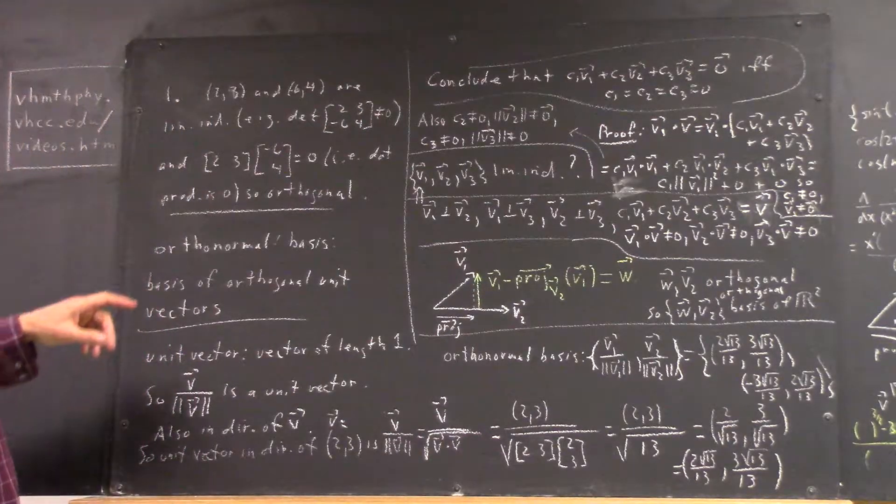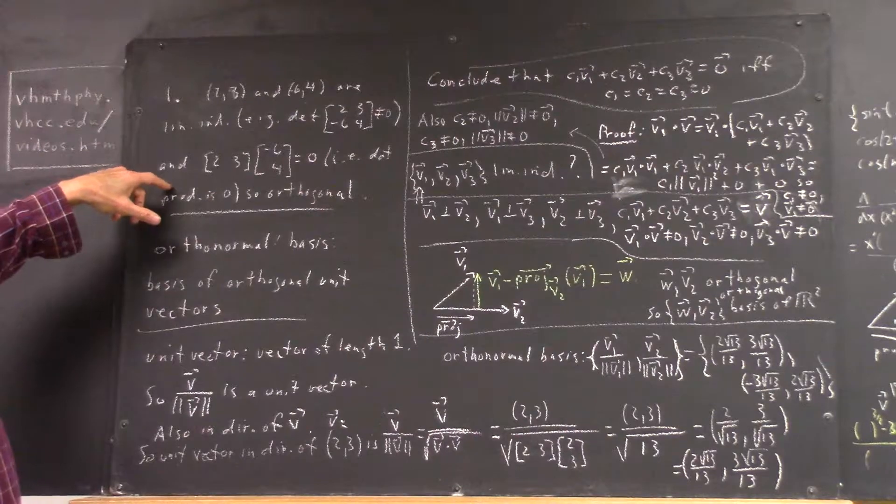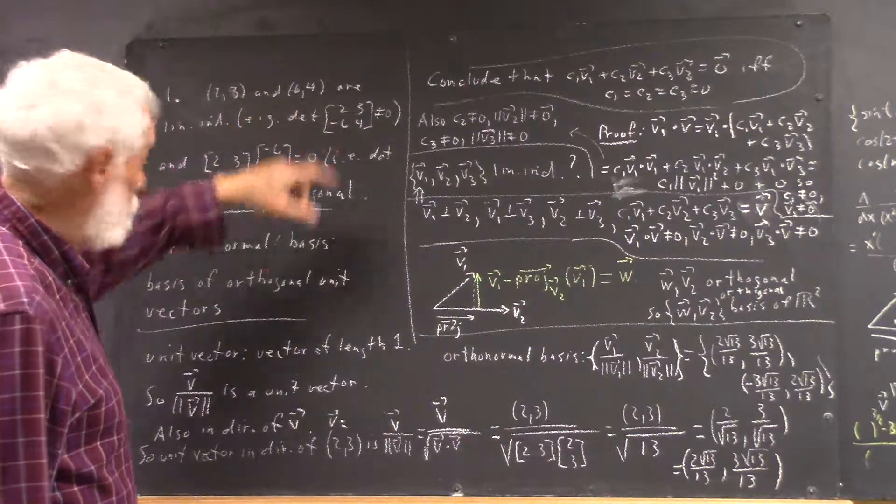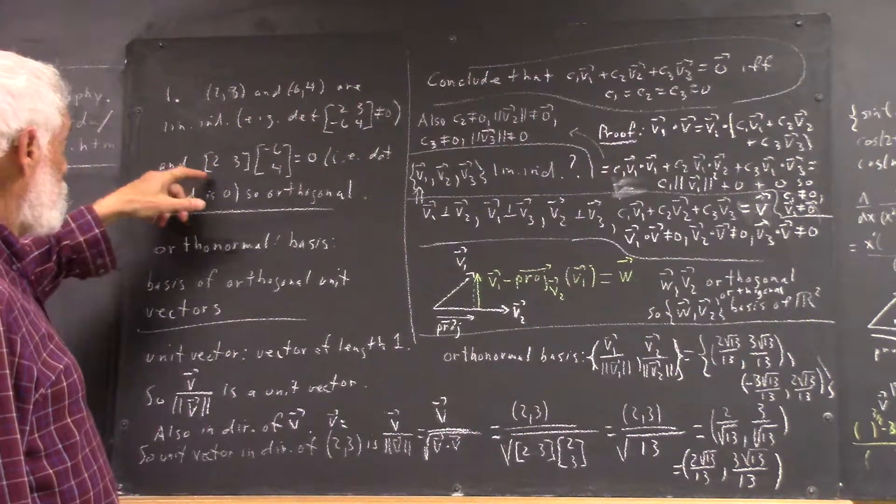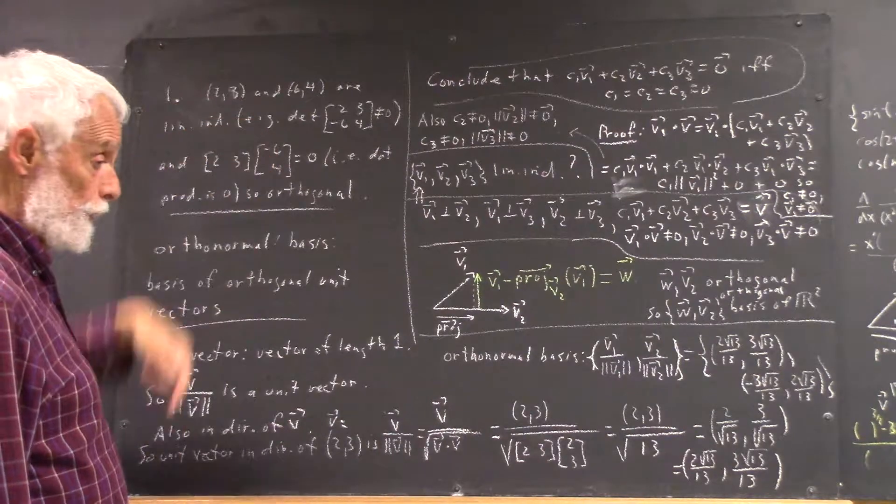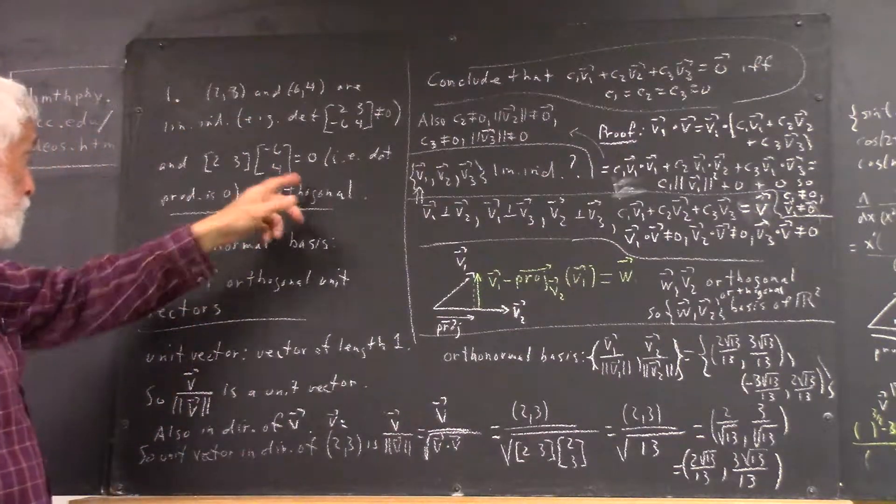In any case, the other thing we can determine is that these vectors are orthogonal, because their dot product, which I'll write as the (2, 3, -6, 4) row column, is zero.